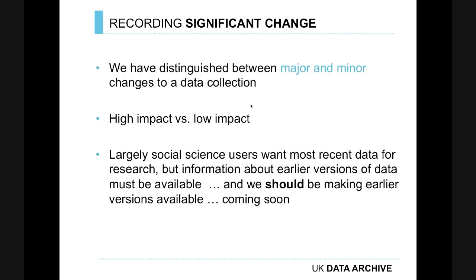One of the most important things is distinguishing between major and minor changes, because some have much larger impact than others. We didn't want to version every single change — that would be difficult to maintain. In our field, we've mostly seen people wanting new data for new research to ask new questions. At the moment we make only current versions available. Early versions can be accessed but not from the website — you have to ask for them. Sometimes there could be 20 different versions and editions of one dataset, and most people really do want the most accurate, up-to-date one.